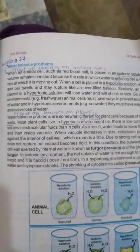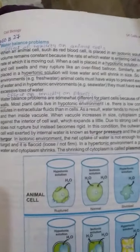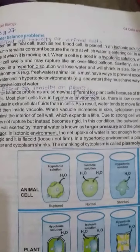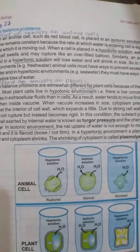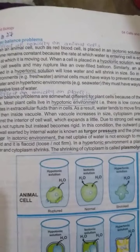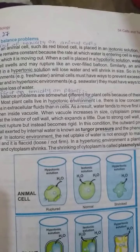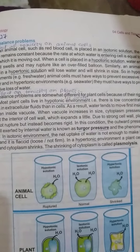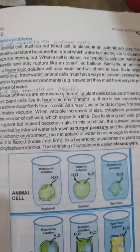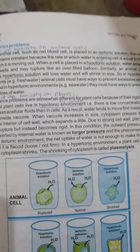In the first paragraph, we study the effect of tonicity on animal cells when we place an animal cell in three types of solution — isotonic, hypotonic, and hypertonic. When an animal cell such as a red blood cell is placed in an isotonic solution, the cell volume remains constant because the rate at which water is entering is equal to the rate at which it is moving out.